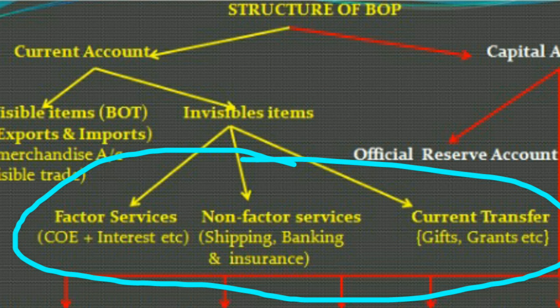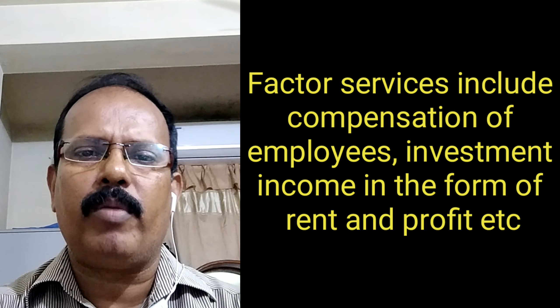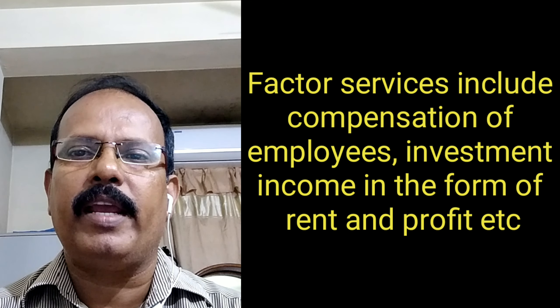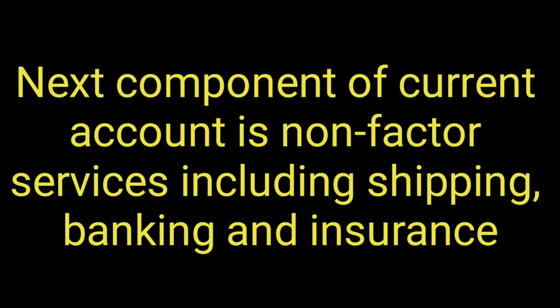Besides visible items, there is another component of current account called invisible items. Invisible items have three components: factor services, non-factor services, and current transfer. Factor services includes compensation of employees and investment income, which may be in the form of interest or profit. All these components have their counter payments — that is, receipts as well as payments. Non-factor services includes shipping, banking, and insurance.